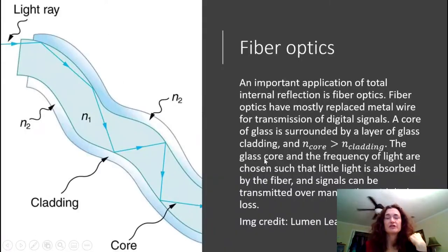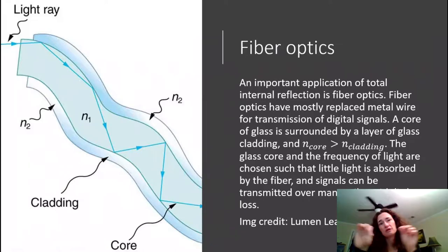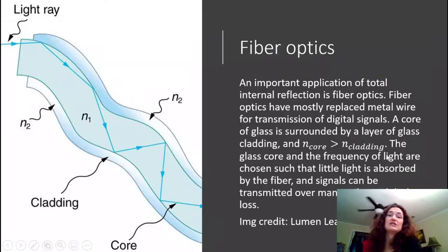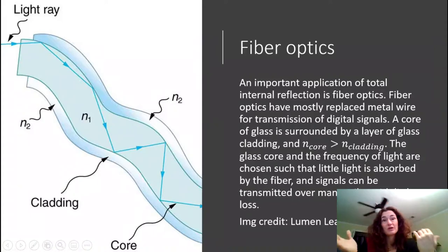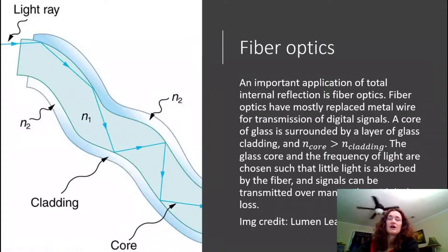The most important application of total internal reflection is in fiber optics. Fiber optics have mostly replaced metal wire for transmission of digital signals. A fiber optic has a core of special glass surrounded by a layer of glass cladding. The index of refraction of the core must be greater than that of the cladding. The cladding also serves a protective purpose — if the core got scratched or damaged without cladding, light would leak out and you'd lose signal. The glass core and frequency of light are chosen so that very little light is absorbed, making signal loss very small even over large distances.